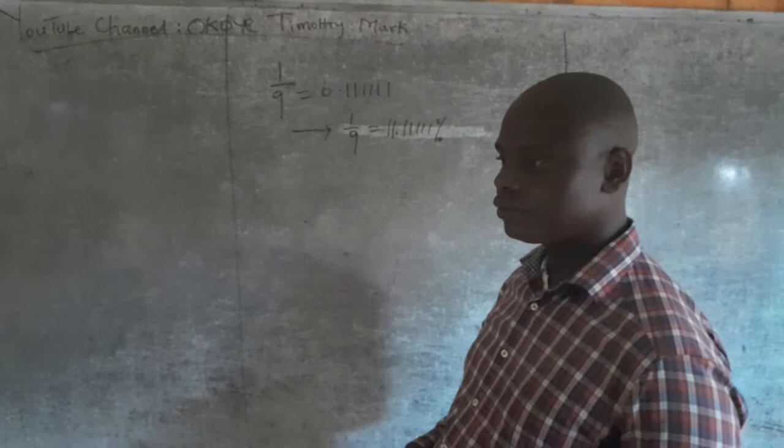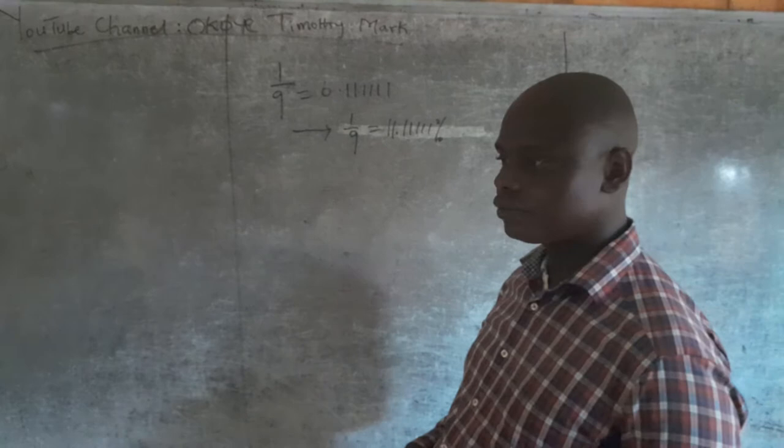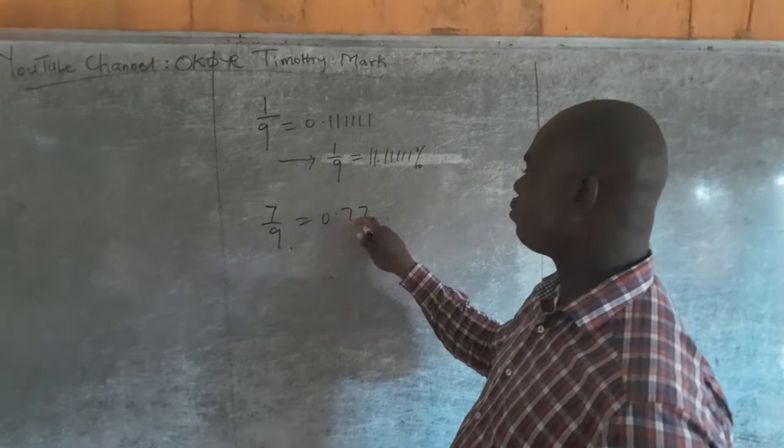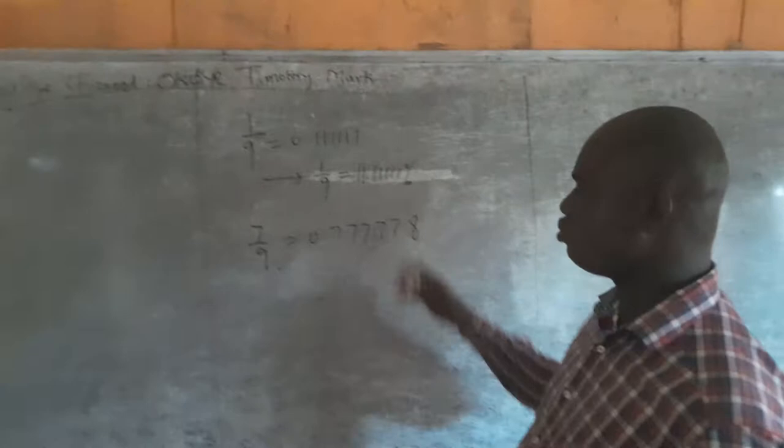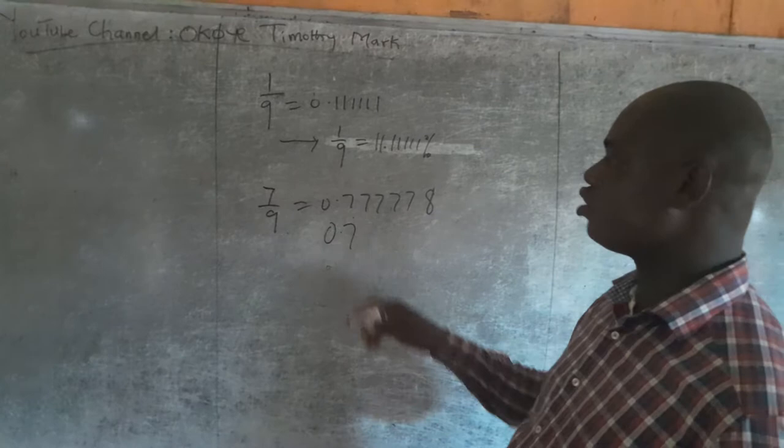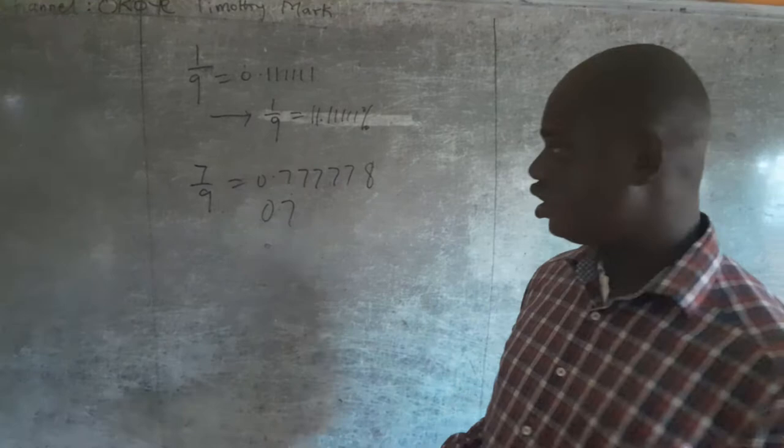We have 7/9 is 0.7777 continuous. Of course you can write it by approximation in the language of mathematics as 0.777 with a dot on the 7, which shows that 7 is repeated indefinitely.